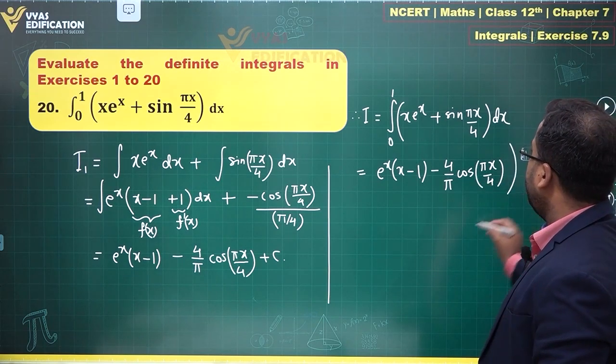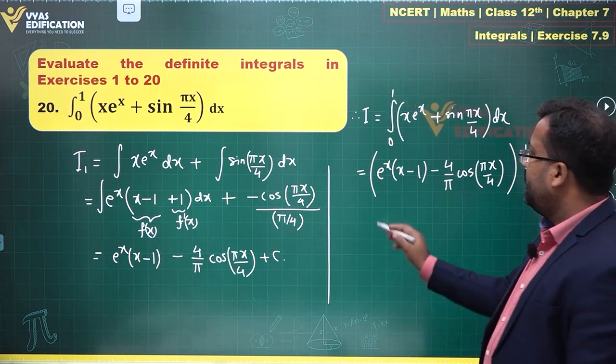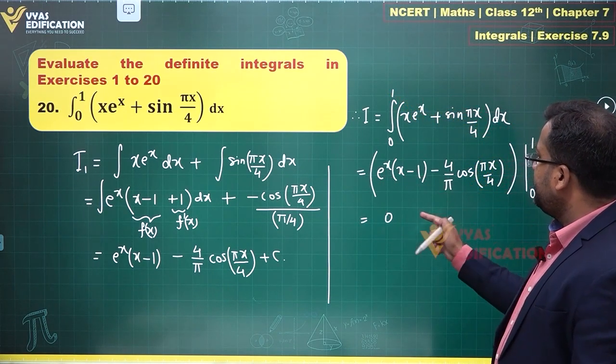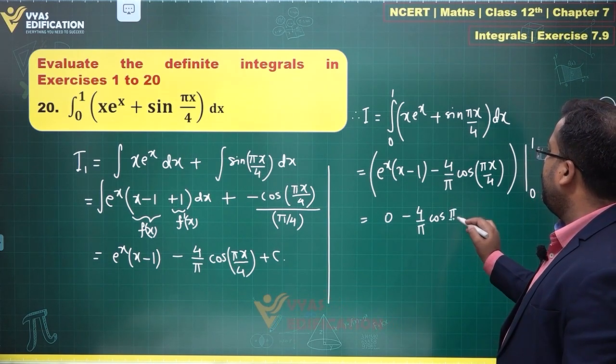And the limits will be from 0 to 1. Let's substitute the limits. Substituting, e^1·(1 - 1) will become 0; 1 - 1 is 0, minus 4/π·cos(π/4) is what I'll get.